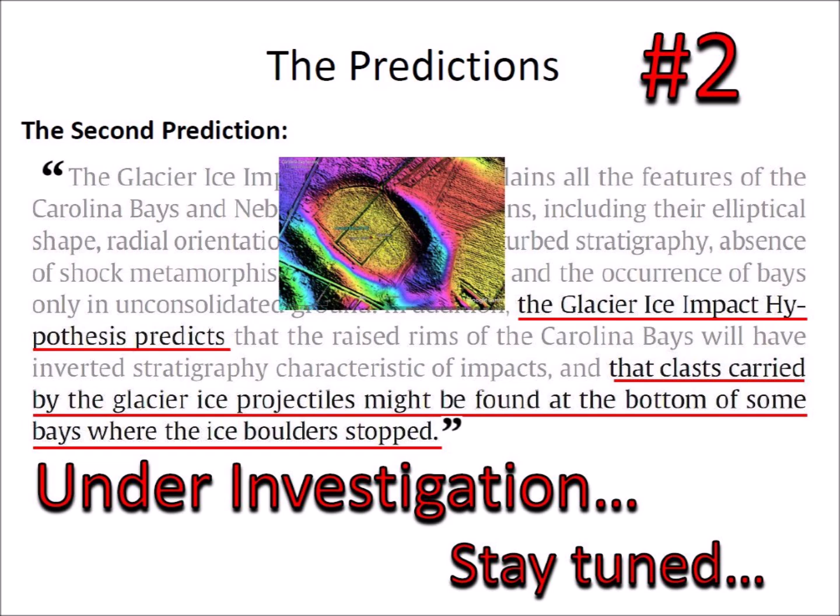Thus far, the first prediction of inverted stratigraphy has been confirmed and the second prediction is being studied. Finding glacial clasts within the Carolina Bays would firmly establish the Glacier Ice Impact Hypothesis as an explanation for the origin of the Carolina Bays and the Nebraska Rainwater Basins. Stay tuned.